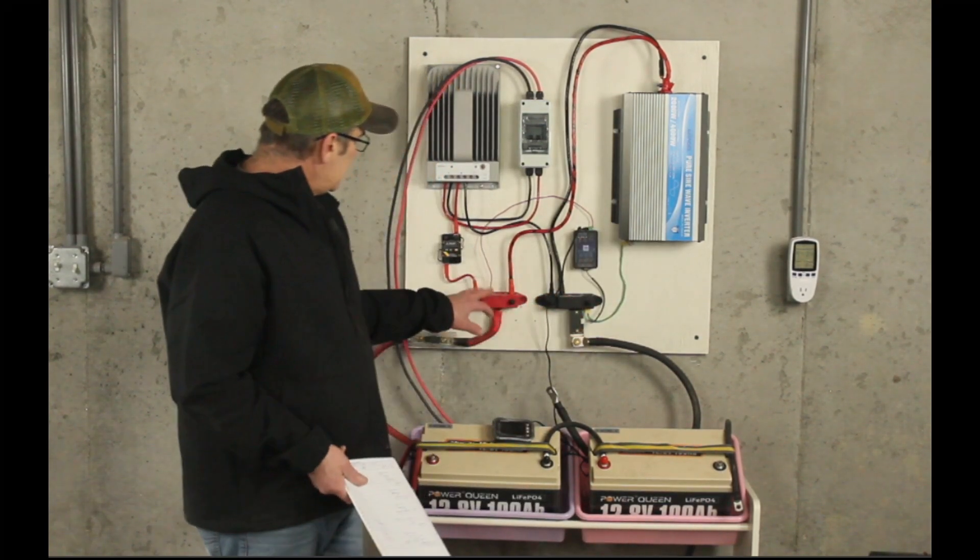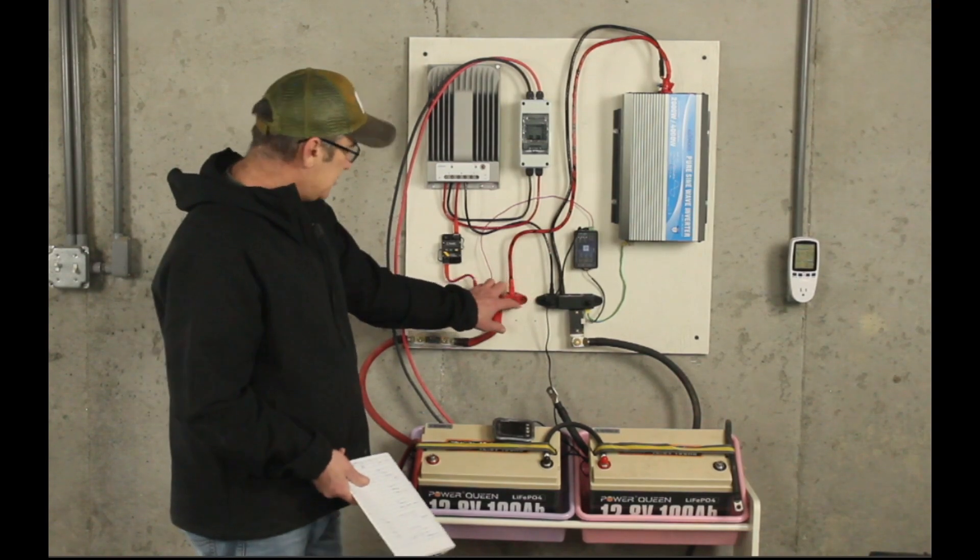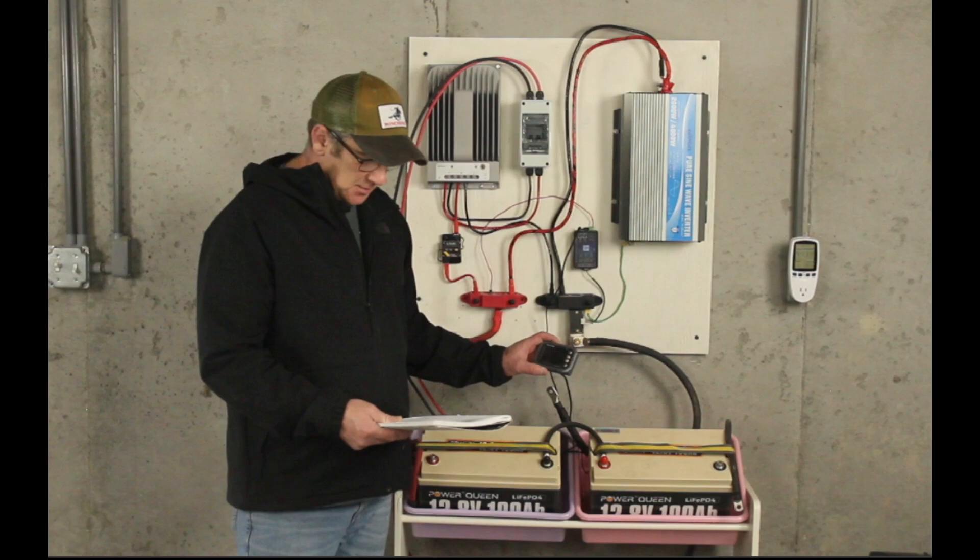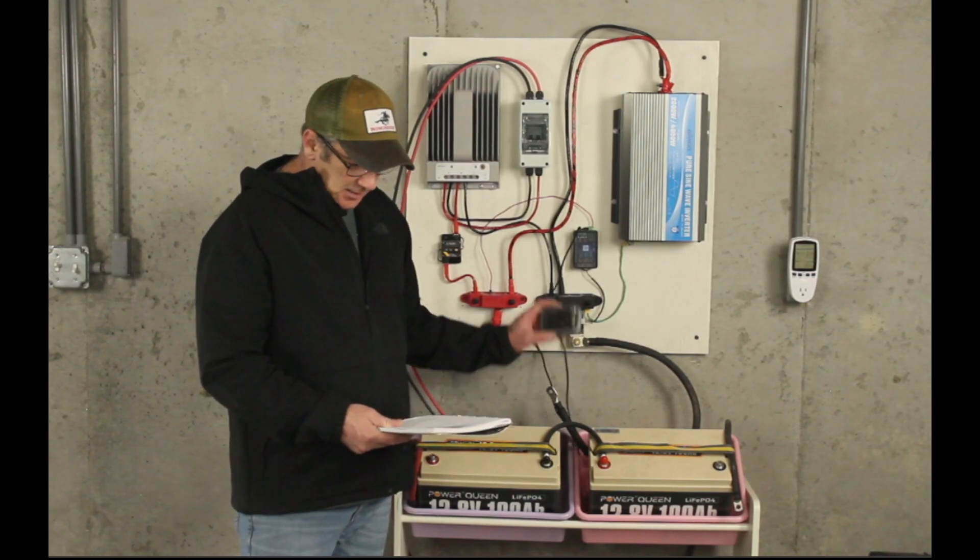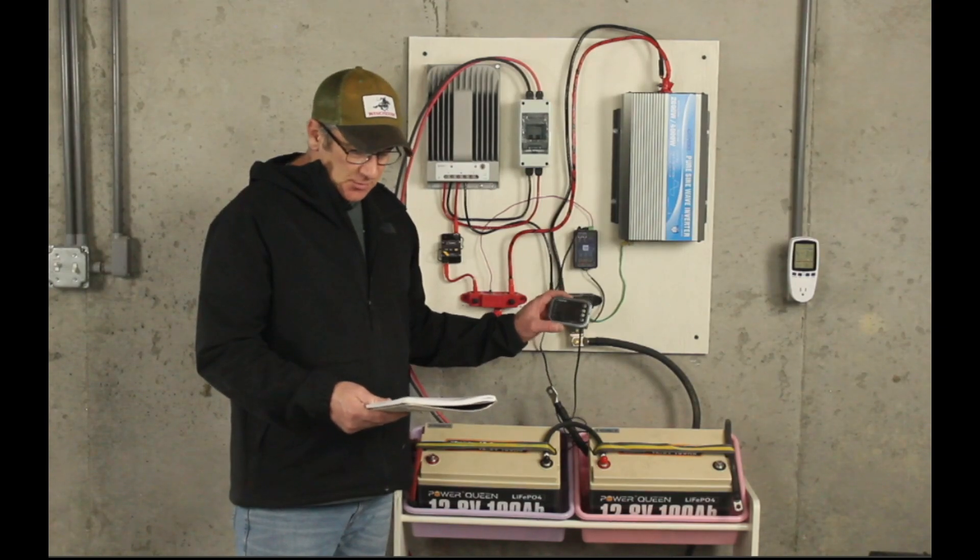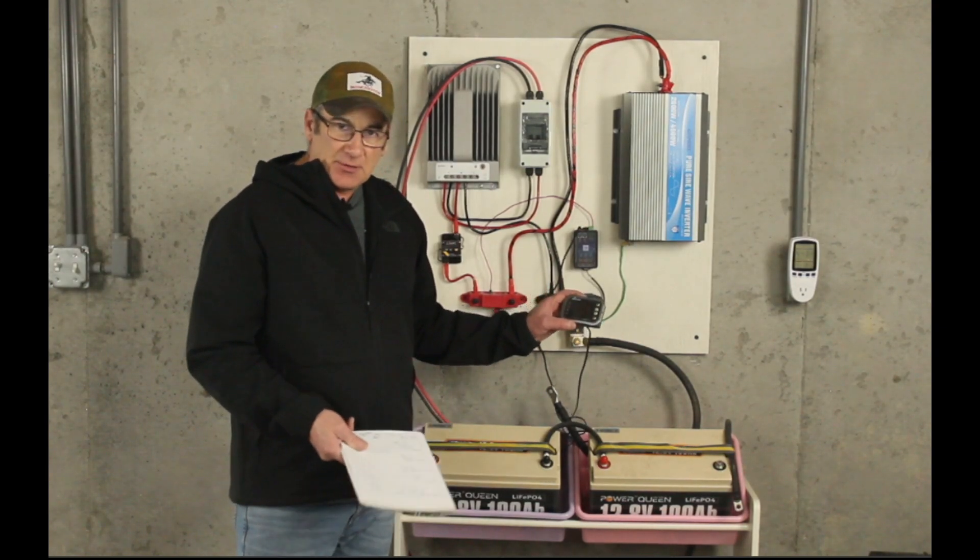And then also out of the junction box we run to a battery monitor. This is a Wanptek battery monitor. This is capable of monitoring between 0 volts and 120 volts and it's capable of handling 400 amps.